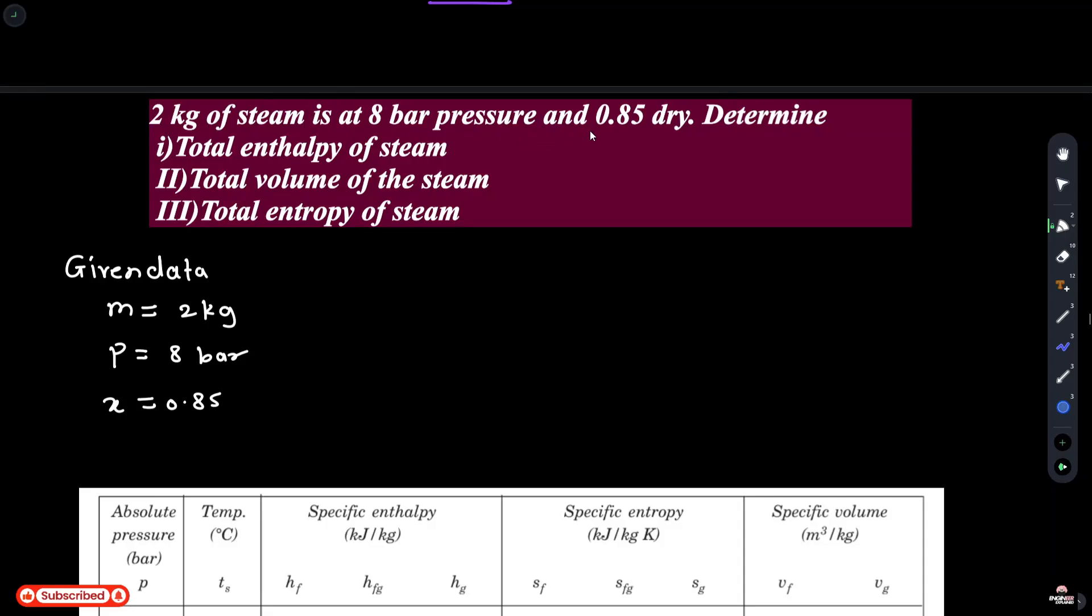2 kg of steam is at 8 bar pressure and 0.85 dryness fraction. So M is 2 kg, P is 8 bar, and dryness fraction is 0.85. Determine total enthalpy of steam, total volume of steam, and total entropy of steam.